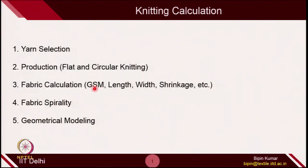We will also see some basic calculations related to fabric, like calculating GSM with fabric structural parameters such as loop length, stitch density, and yarn tex. We will also see how to determine length and width of the fabric with the help of shrinkage parameters. The fourth part is fabric spirality, which is very commonly observed in single jersey fabric on circular knitting, especially multi-feeder circular knitting machines.